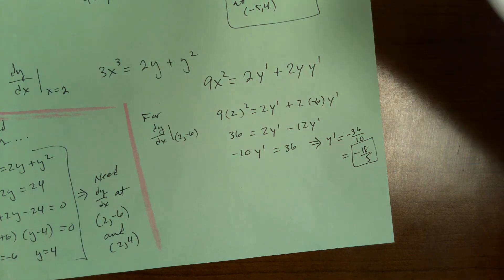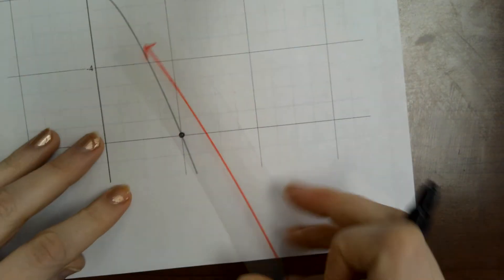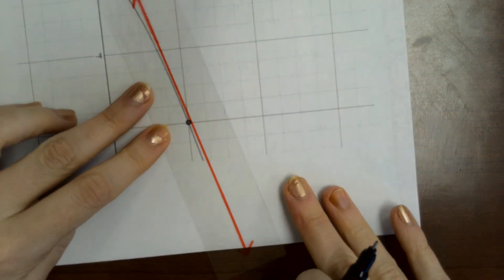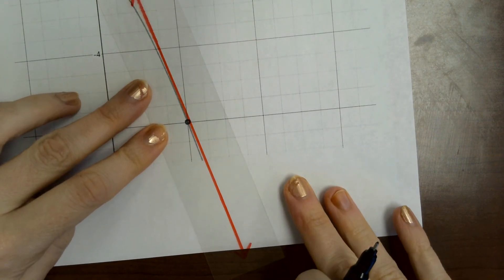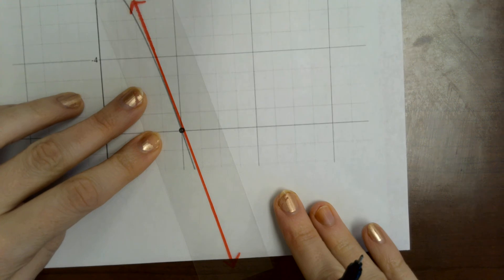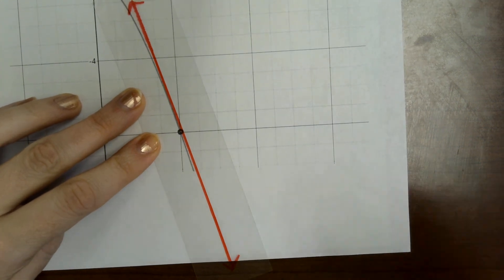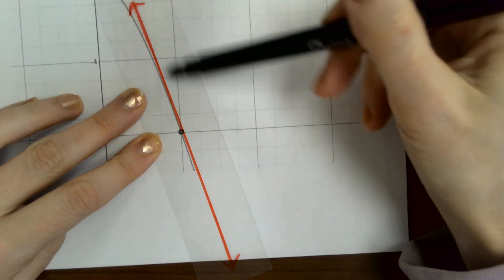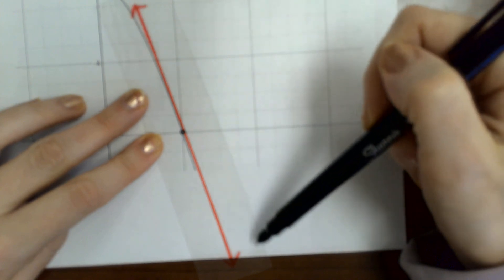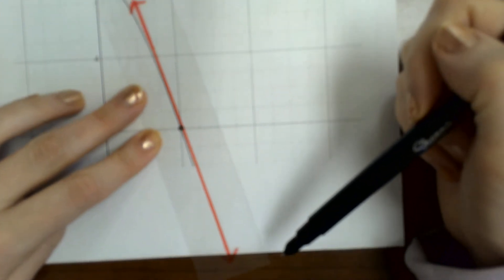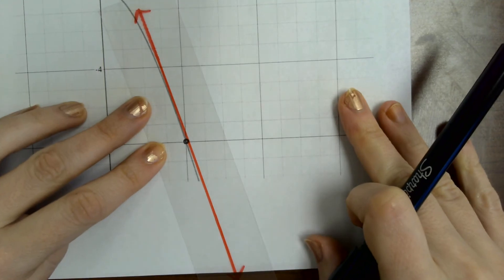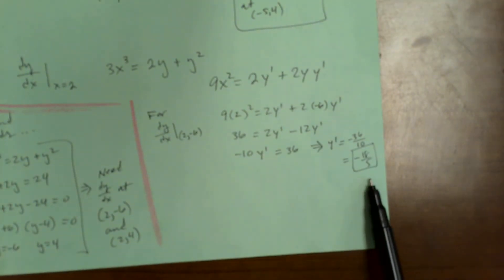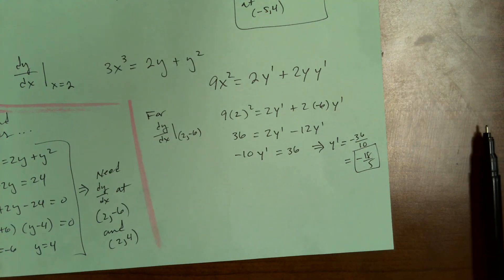Okay. So at this point, so the instantaneous rate of change, I'm throwing that vocabulary in there too, which equals, which is the same as the slope of the tangent line, which is the same as the derivative right here, the slope of that red line. I'm blurry. The slope of that red line is negative 18 over 5.